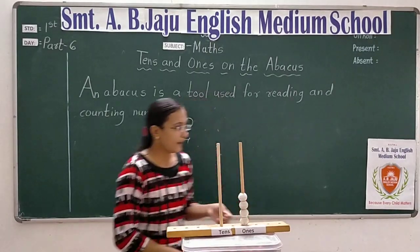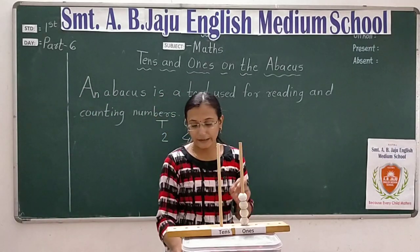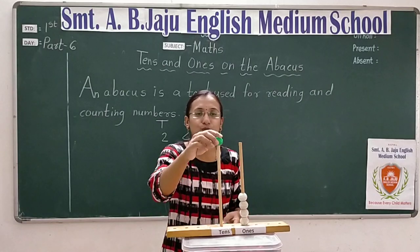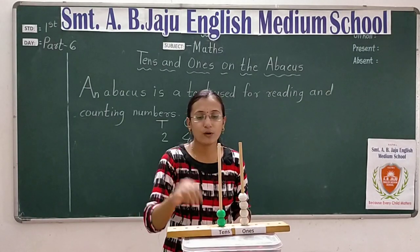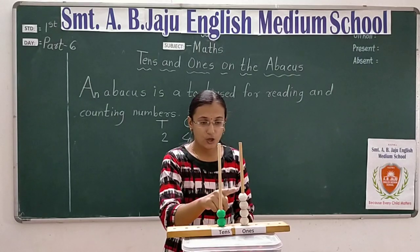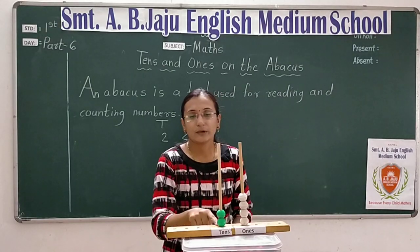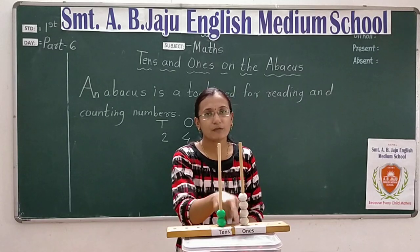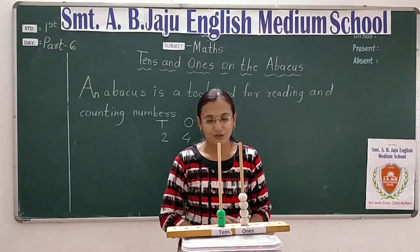Okay? And tens space pe konsa digit hai? Two. So, tens space pe kitne beads daalenge? Yes, very good — two. Iska matlab kya hua? Yahan pe tens space pe kitne beads hain? Two beads hain. Aur ones place pe kitne beads hain? Four beads hain. Toh read kaise karoge? Two tens, four ones means twenty-four. Hai na? Chalun.